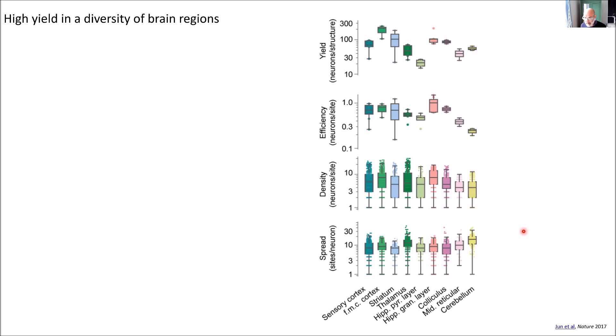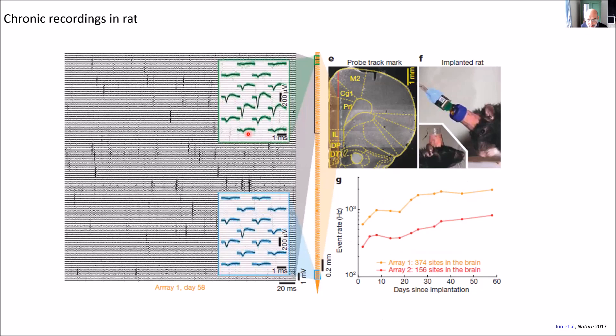One can also do chronic recordings. Here are chronic recordings in rat, in which the probe is going through secondary motor cortex and then going down the medial bank. There are nice spikes that last for many days. That doesn't mean that it's the same neurons. We will then go into the business of whether you're recording from the same neurons across days. And the answer is you can.